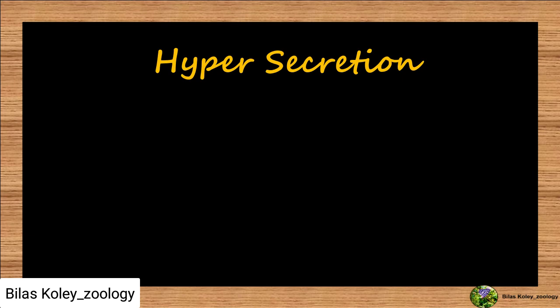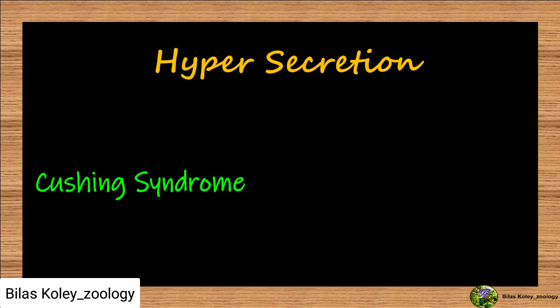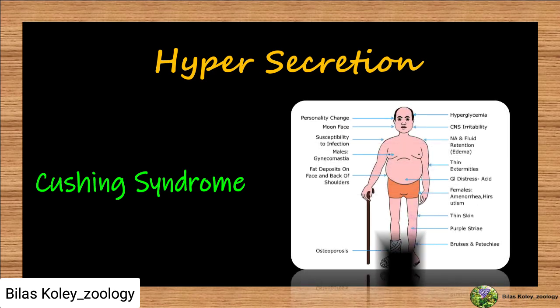Oversecretion of cortisone, a glucocorticoid, causes Cushing's syndrome, which is characterized by high sugar levels in blood, loss of sugar in urine, loss of weight as large numbers of amino acids are converted into sugars, high sodium and low potassium concentration in plasma, rising blood volume and blood pressure, and swollen face and neck.